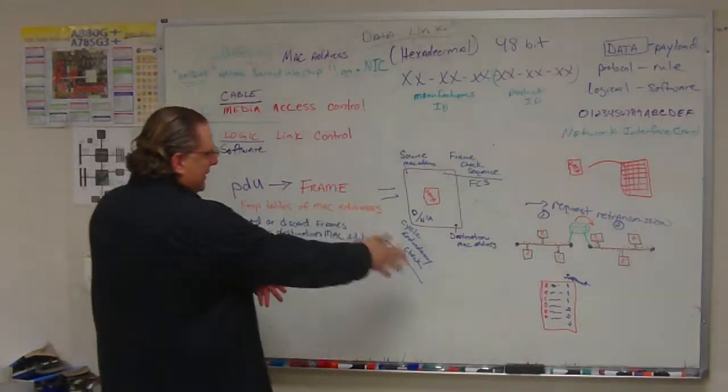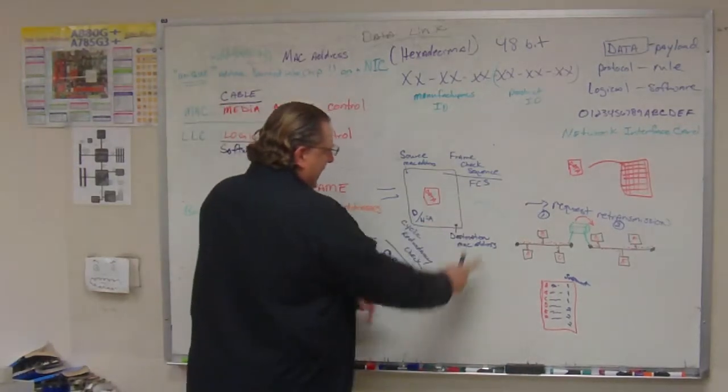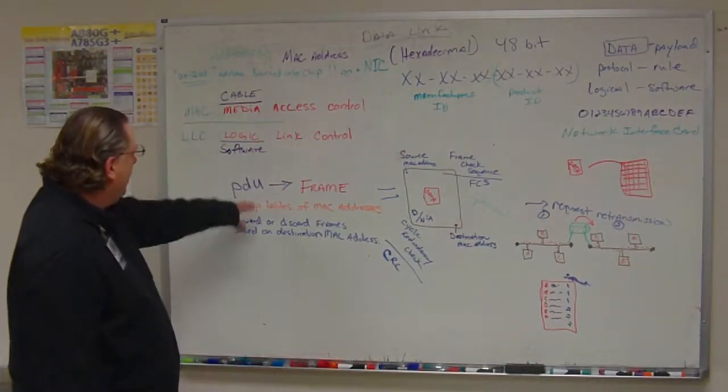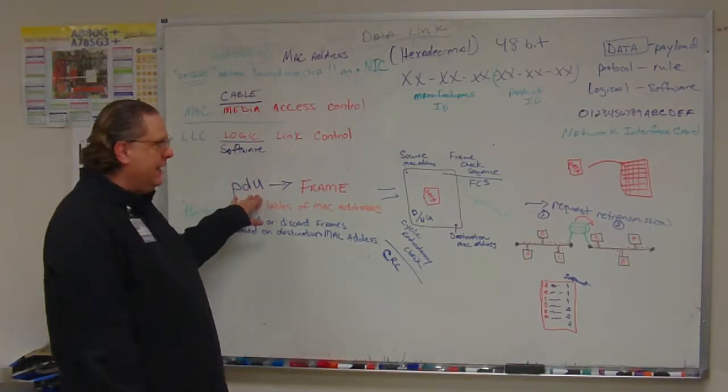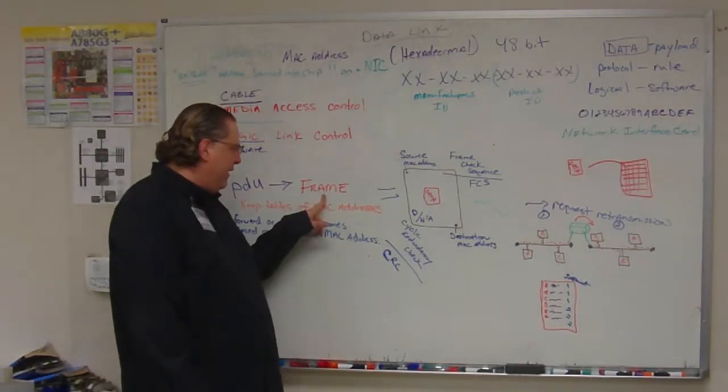With the source, destination MAC address, FCS, CRC, and the payload, this is a definition for what data looks like at this layer. It's called a frame.